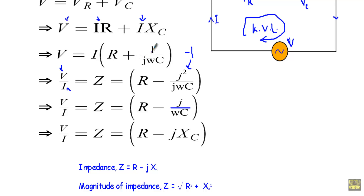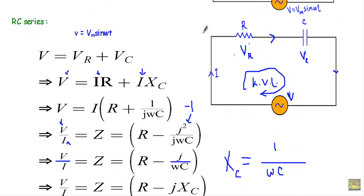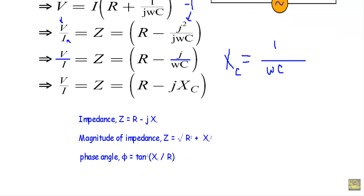...we get Z equals R − j/(ωC). Since XC equals 1/(ωC), we can replace 1/(ωC) with XC. Therefore the impedance of an RC series circuit is Z equals R − jXC. The magnitude is |Z| equals √(R² + XC²), and the phase angle is φ equals tan⁻¹(XC/R).